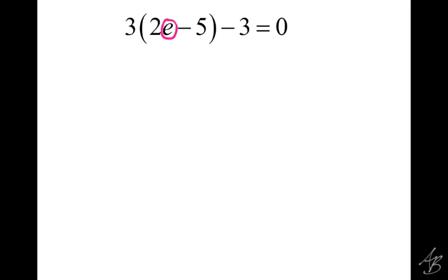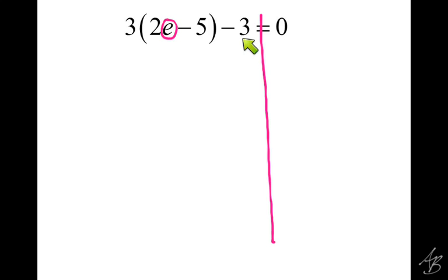Alright, we want to solve for E here. There are a few different ways we could do this — we could distribute, combine like terms, and then get E by itself. In this problem, we don't have E's in different places, so we could do all that, but it's probably going to be more work than necessary. Instead, we can just get rid of stuff one at a time. If I want to get E by itself, I need to get rid of this 3, this 2, this 5, and this 3. Which should I get rid of first? The minus 3 — doing order of operations backwards, we get rid of addition and subtraction before multiplication.